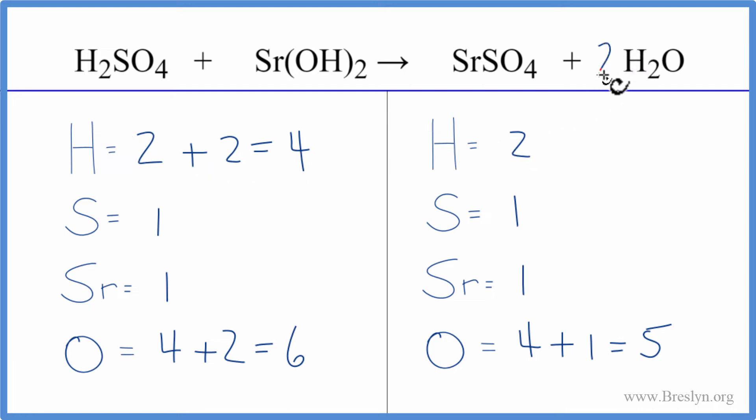By putting a two in front of the H2O, so we have two times two, that'll give us four. Those are balanced. And now we need to update these oxygens, so we have our four oxygens here plus one times two, that's two, and that gives us six.